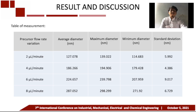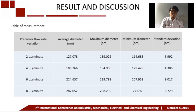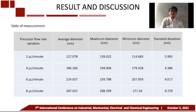The diameter measurement data using ImageJ software shows that the use of a larger solution flow rate will produce nanofibers with a larger diameter. The results of this measurement are in accordance with previous studies, which explain that the diameter of the nanofibers produced from the electrospinning process is directly proportional to the flow rate of the solution used.